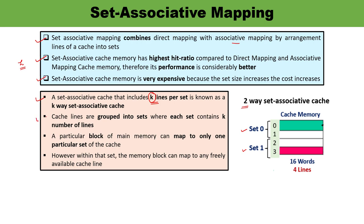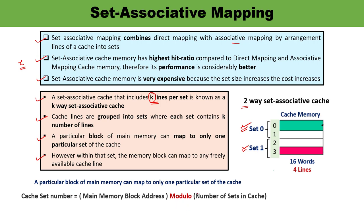Cache lines are grouped into sets. As you can see, there are four lines and all four have been grouped into two sets, with each set consisting of two lines. Now a block of main memory can be mapped to either set 0 or set 1. The concept of direct mapping is used to select the set. Then, suppose set 0 is selected — within set 0, any one of the available cache lines can be used for copying the data, and that is where associative mapping is used. So set 0 is selected first via direct mapping, and the available cache line within that set is chosen via associative mapping.